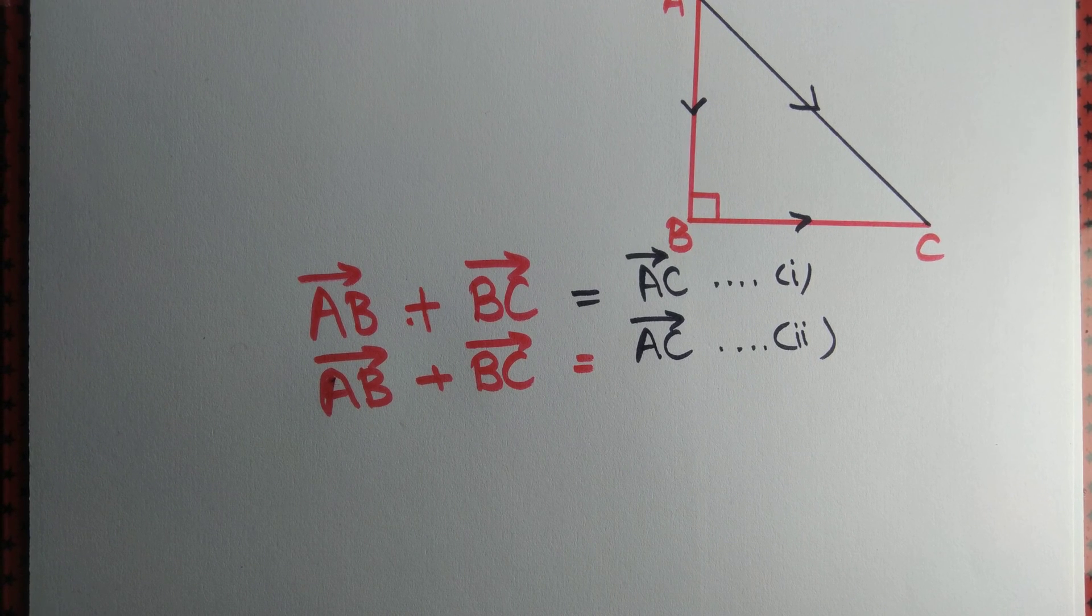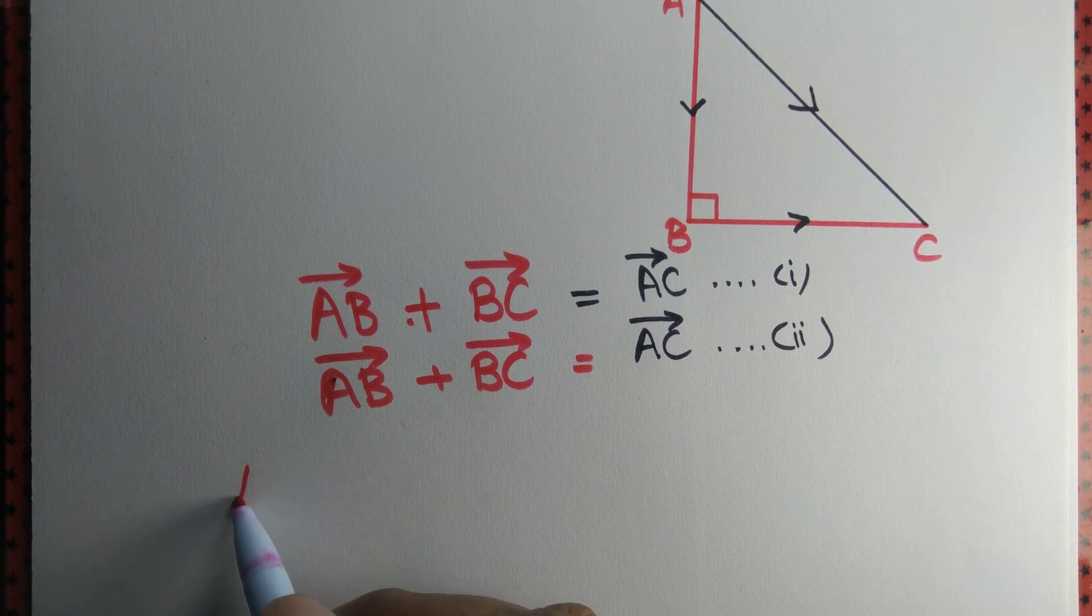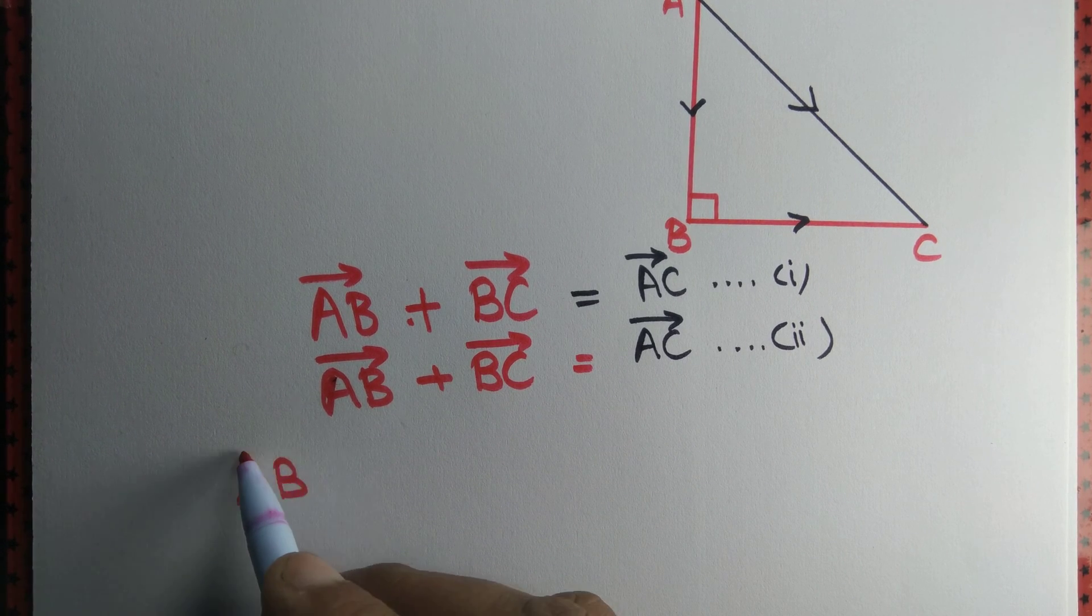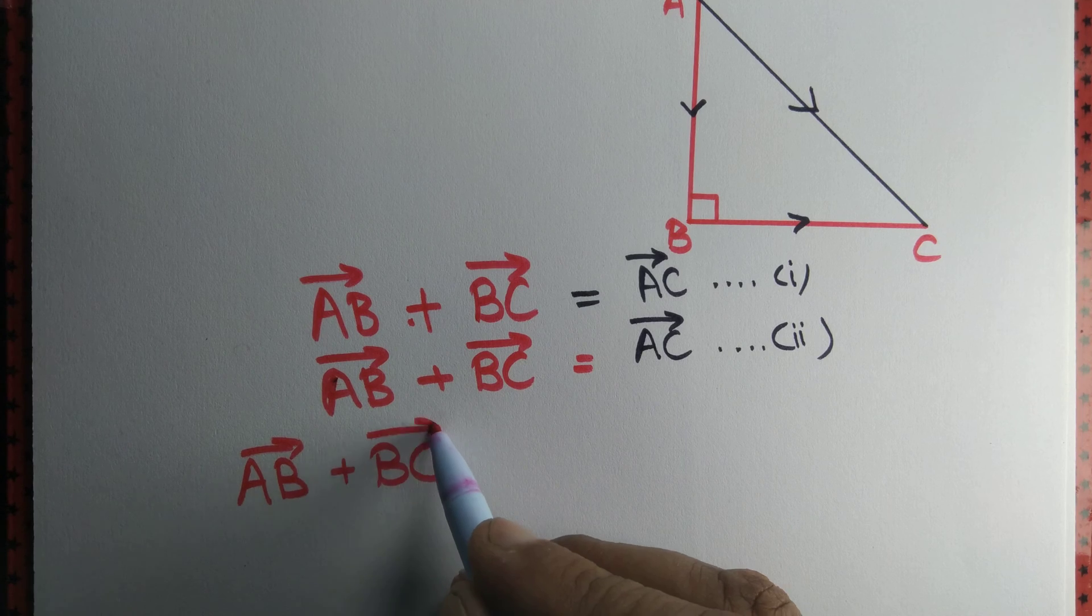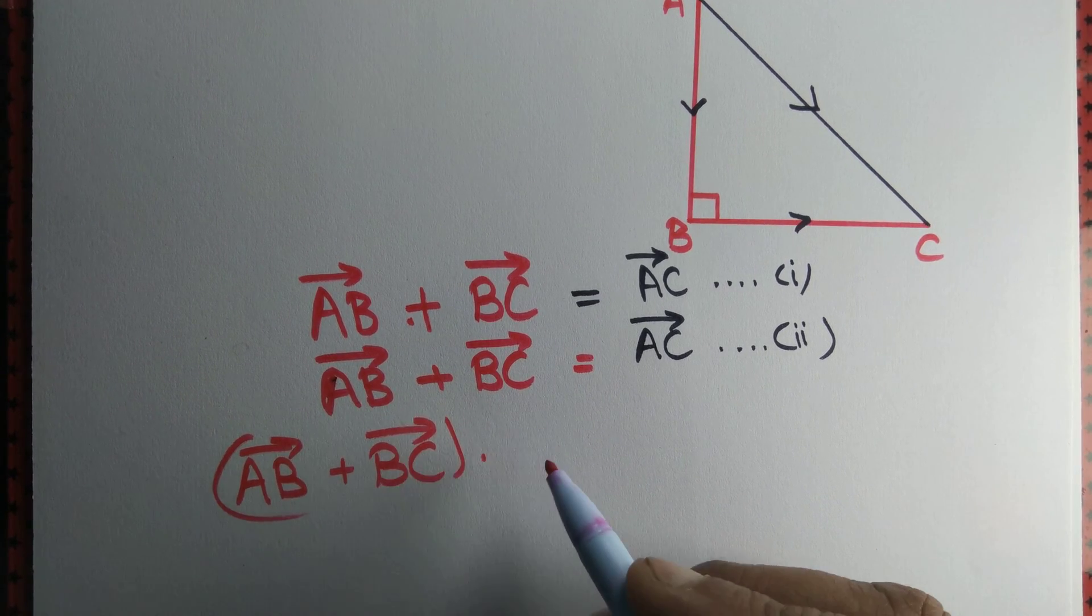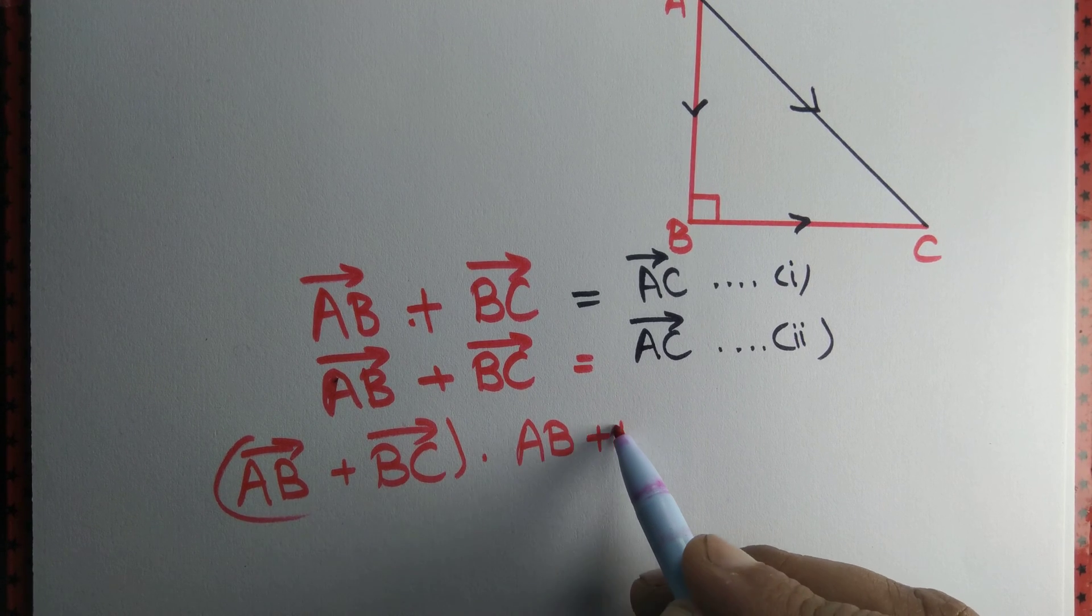Then we will have AB plus BC dot AB plus BC.